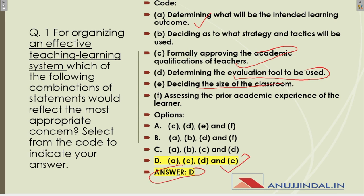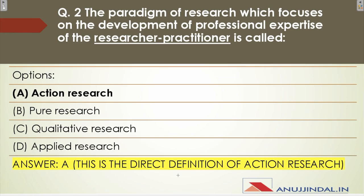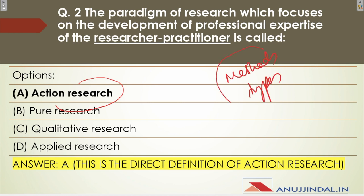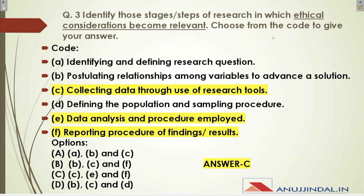The next question asks: the paradigm of research which focuses on the development of professional expertise of the researcher-practitioner is called what? This is a very direct question because this is simply the definition of action research. If you have read methods and types of research, this question becomes very easy to solve.